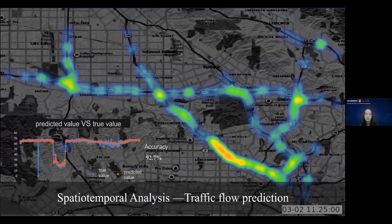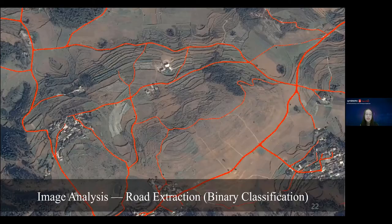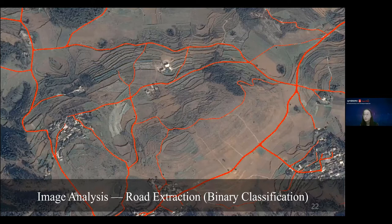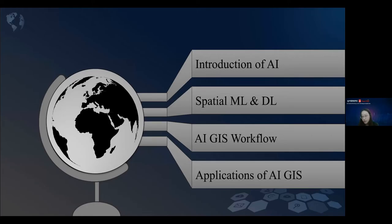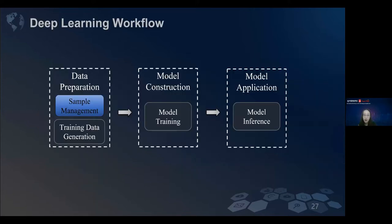Those are some commonly used deep learning models. We classify them based on different operators and different deep learning frameworks. We all know that since AI application itself is a long-term process involving multiple steps, if we want to provide an end-to-end AI solution, we need to support a complex AI model process. Let's see the whole AI GIS workflow. Let's take deep learning workflow as an example. We decompose the whole workflow into three parts: data preparation, model construction, and model application.